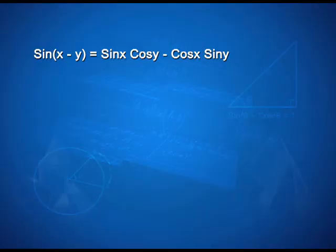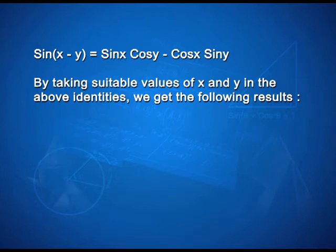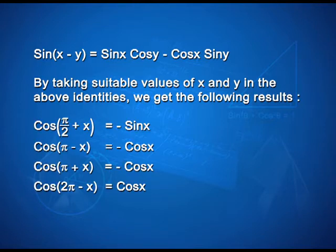To get another identity, by replacing y by −y, sin(x−y) = sin x·cos y − cos x·sin y. By taking suitable values of x and y in the above identities, we get the following important results: cos(π/2 + x) = −sin x; cos(π − x) = −cos x; cos(π + x) = −cos x; and cos(2π − x) = cos x.